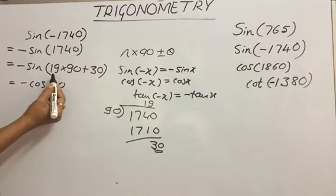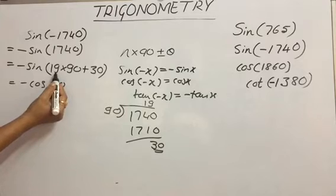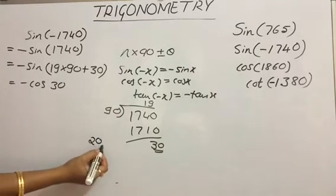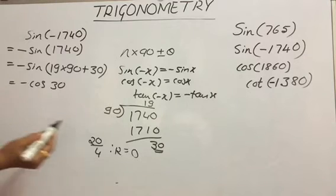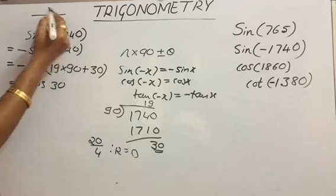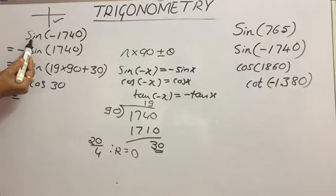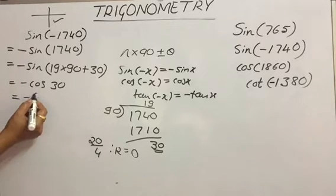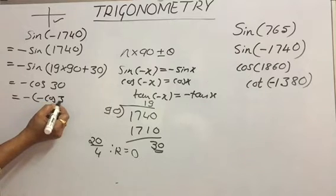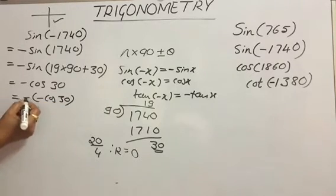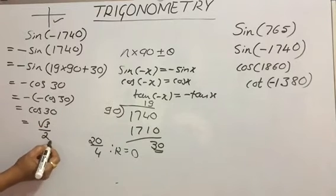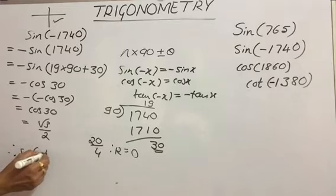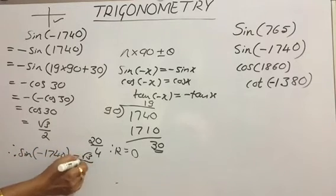Now check the quadrant. It is plus representation, so add 1 to n. n is 19; adding 1 gives 20. Dividing 20 by 4, the remainder is 0. If 0 is the remainder, the angle lies in the 4th quadrant. In the 4th quadrant, sin is negative, so one more minus sign exists. So we have −(−cos 30). Minus × minus becomes plus, giving +cos 30. The value of cos 30° is √3/2. Therefore, sin(−1740°) = √3/2.